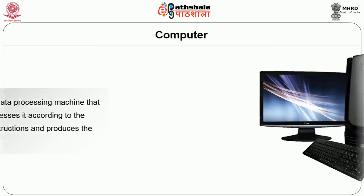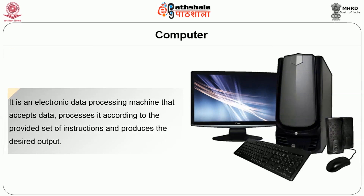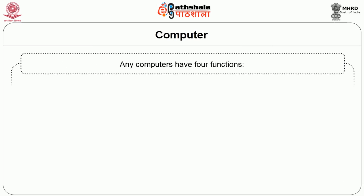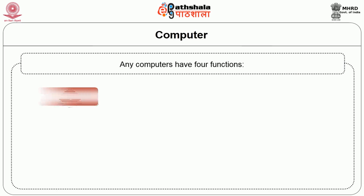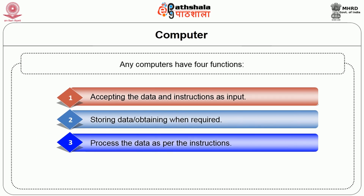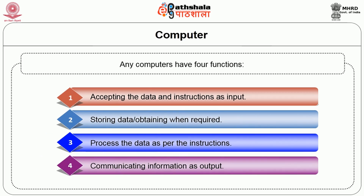A computer is an electronic data processing machine that accepts data, processes it according to a provided set of instructions, and produces the desired output. Any computer has four functions: accepting data and instructions as input, storing data and retrieving when required, processing the data as per the instruction, and communicating information as output.